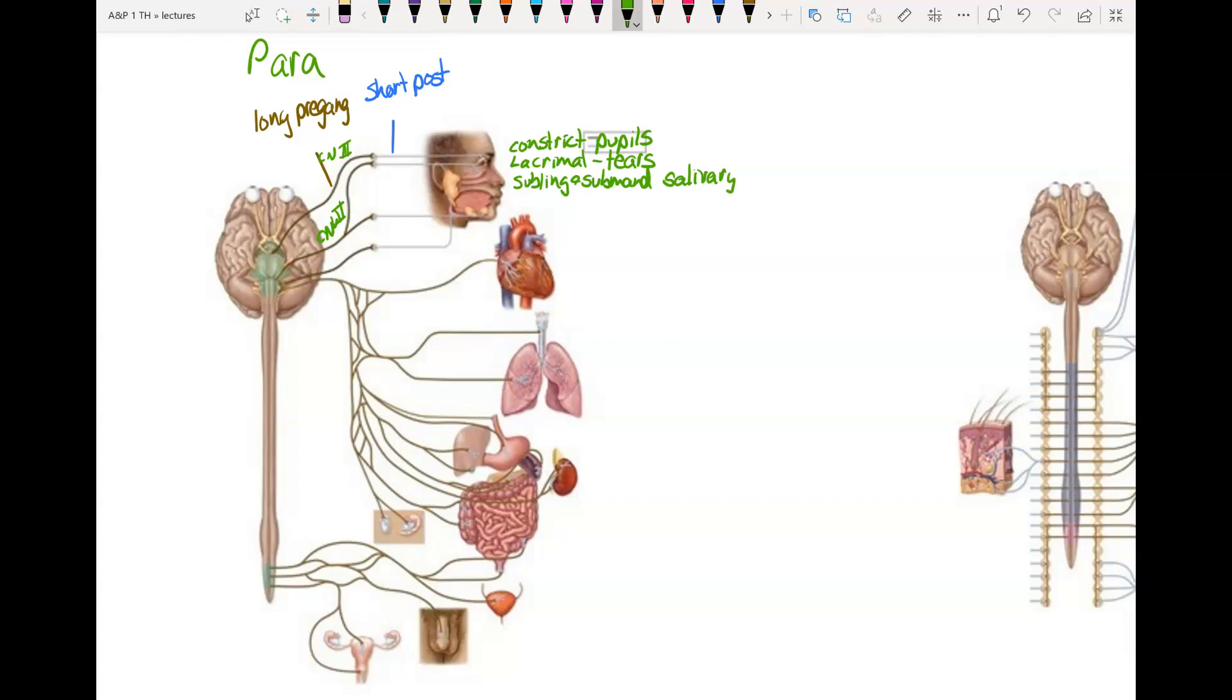Then you have glossopharyngeal, number 9. It goes to the parotid salivary gland. And in both cases, you're going to stimulate more saliva production.